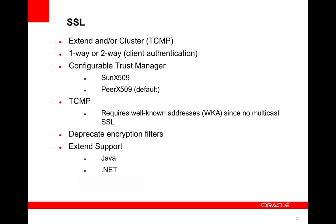That covers the main Coherence Extend features. We've added SSL in 3.6, supported both for Coherence Extend — meaning between clients and proxy — and also within the Coherence cluster. TCMP is the cluster protocol that Coherence uses. We support basically all of the different variations of SSL: one-way or two-way SSL.